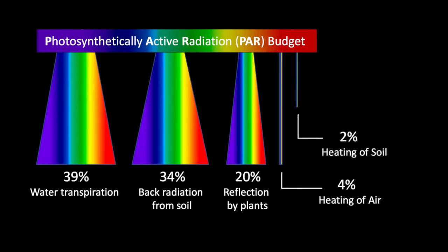4% is used for heating the air, 2% for heating the soil, and 1% is actually used for photosynthesis.